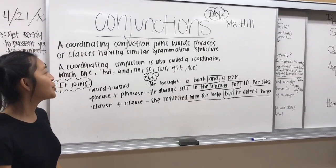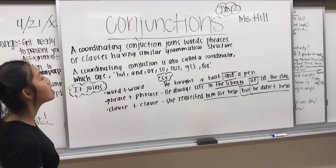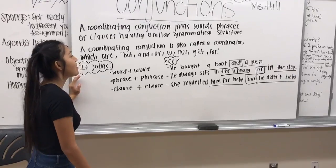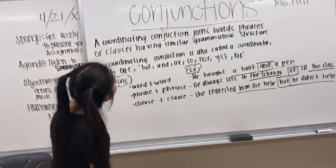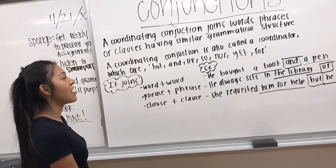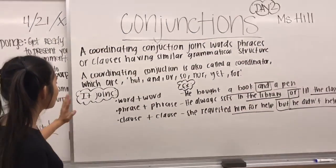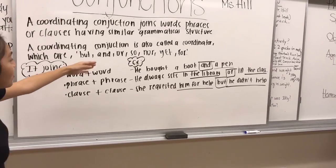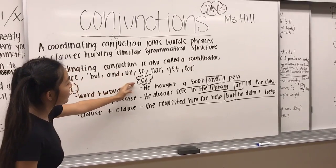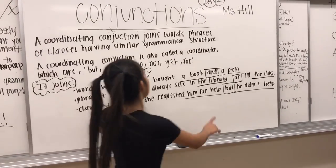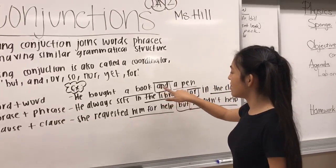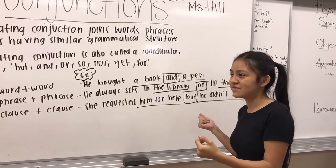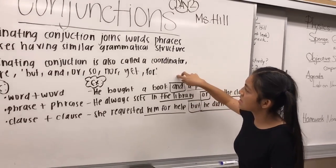A coordinating conjunction joins words, phrases, or clauses having similar grammatical structures. A coordinating conjunction is also called a coordinator. The coordinating conjunctions are: but, and, or, so, nor, yet, and for. It joins word plus word, phrase plus phrase, and clause plus clause. An example of word plus word: 'He bought a book and a pen' — 'book' and 'pen' are the words being joined, and 'and' is the conjunction.